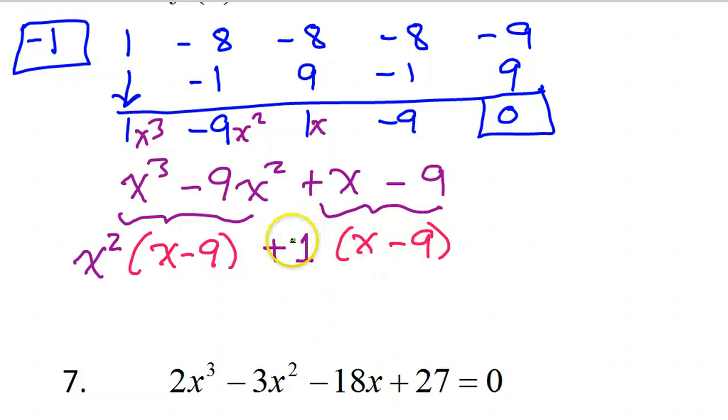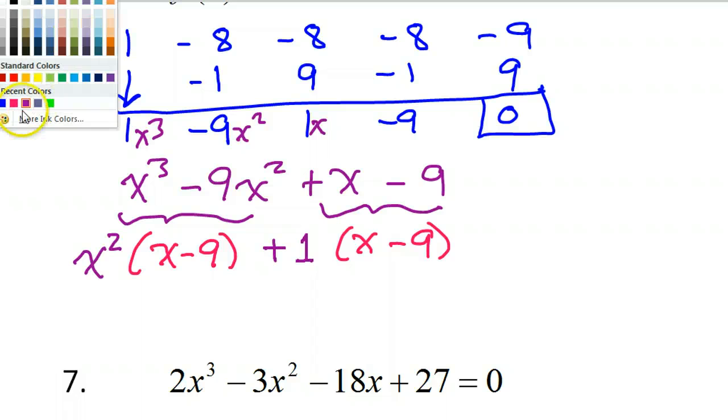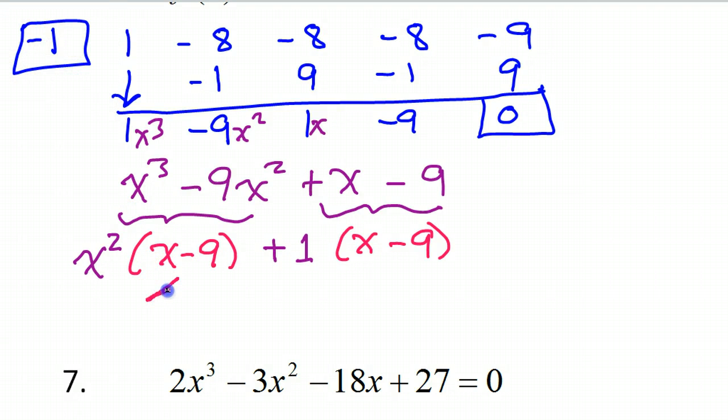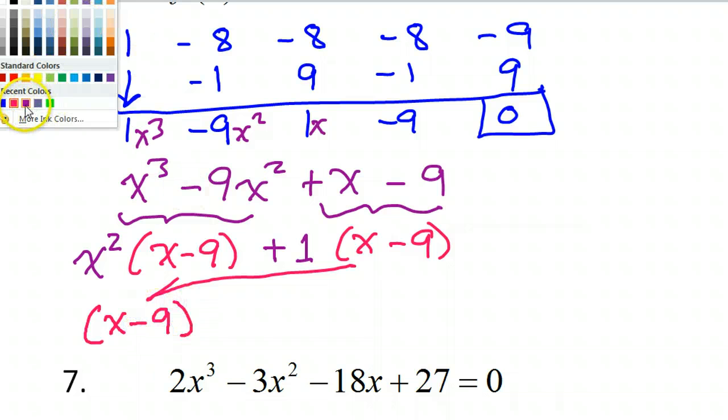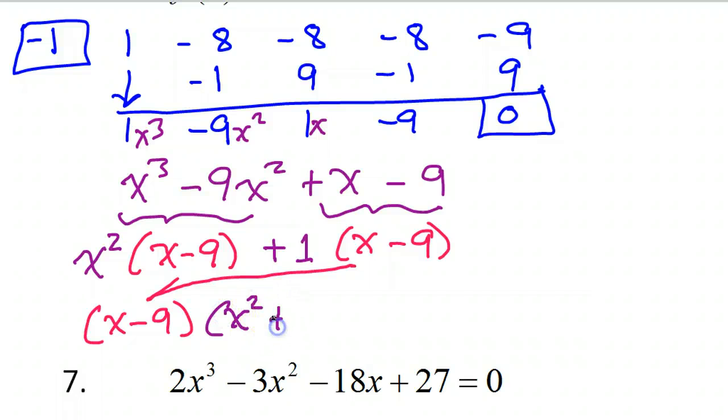Now think about it, if I distribute a 1, that's not really changing anything. 1 times x is x, 1 times negative 9 is negative 9. I haven't really changed anything but the way it looks. But it will make it easier to see what's happening because on my next step, when I take the x minus 9 out, I factor it out, it makes it more clear to you that what's left behind is x squared plus 1. And that 1 does need to be there once you take the x minus 9 away.